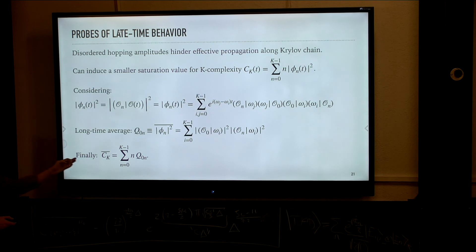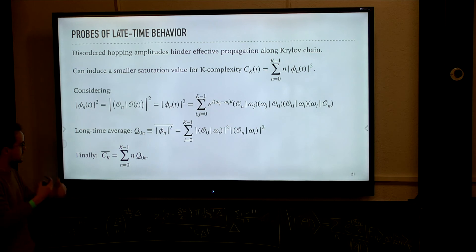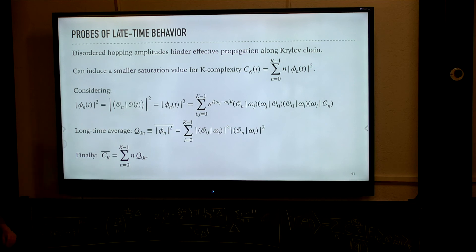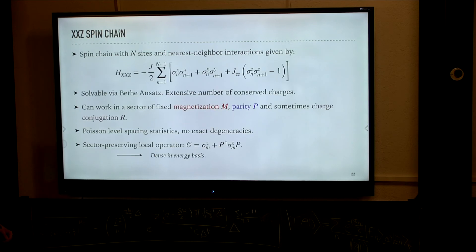Finally, the long-time average of complexity is given by the expectation value of position that one gets from this transition probability — so it's the site of the Krylov chain that is most likely to be reached on average. We probe this now with the case of a strongly interacting system, which is the XXZ spin chain.